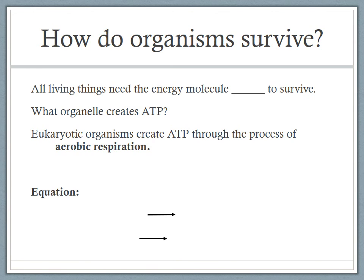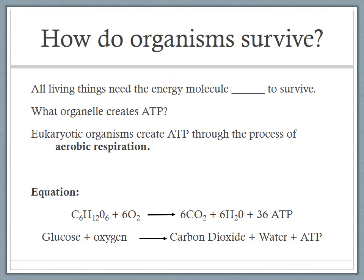The equation for aerobic respiration is a chemical reaction taking place. Below is the same reaction in word form. The substrates needed are glucose and oxygen, and the products will be carbon dioxide, water, and ATP. Basically, you are taking glucose and breaking it down into carbon dioxide and water, creating ATP from the molecular bonds that hold this large chemical together. Those bonds are broken apart to create energy transferred into ATP.